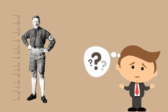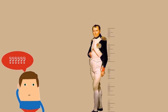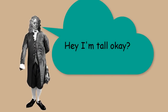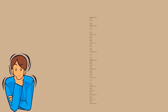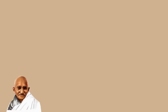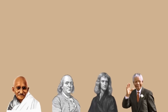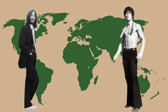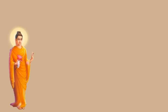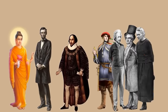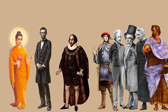Ever wondered how tall Hitler was? Or what if Napoleon Bonaparte wasn't that short? Or how much did Sir Isaac Newton scale in height? Or did you know that Mozart and Archimedes had the same height? This video is about famous people throughout history. These famous historical figures are chosen from a range of different cultures and countries. They include famous spiritual figures, politicians and writers, and many more who have helped to shape human history.